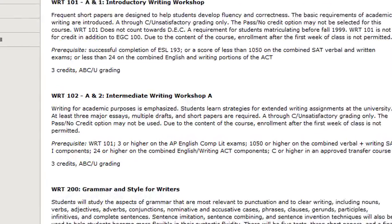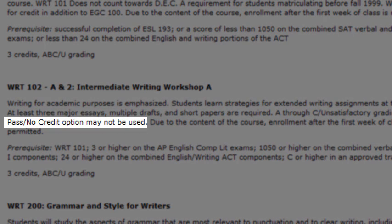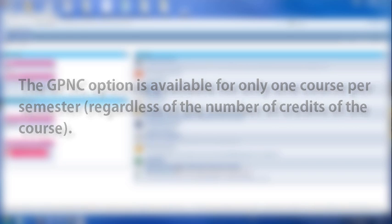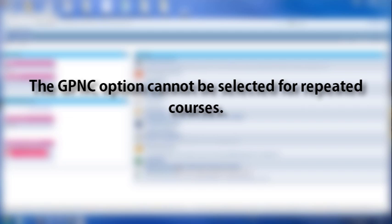Courses not available for the GP&C option are noted in the Bulletin Course Descriptions. The GP&C option is available for only one course per semester, regardless of the number of credits of the course. Summer 1 and 2 is considered one semester. The GP&C option cannot be selected for repeated courses.